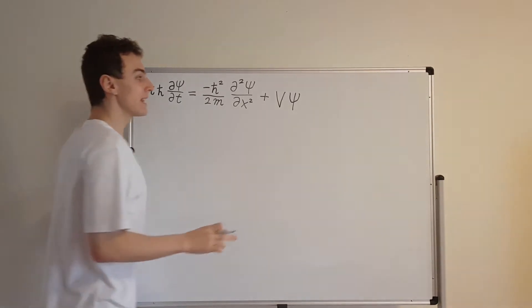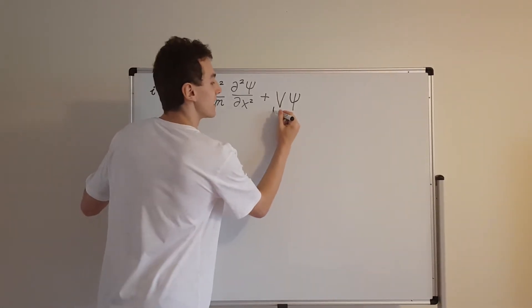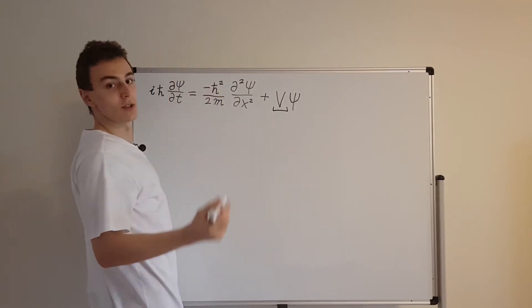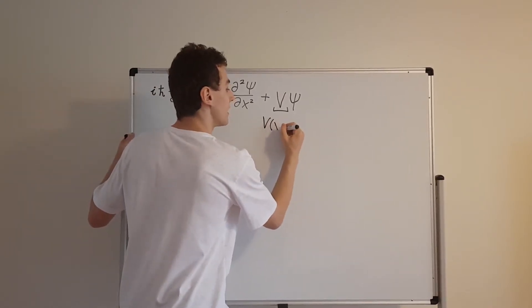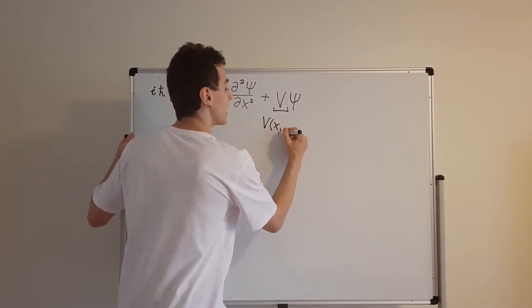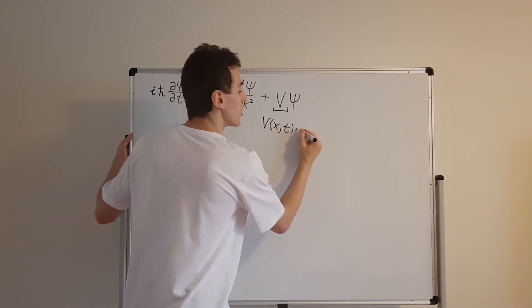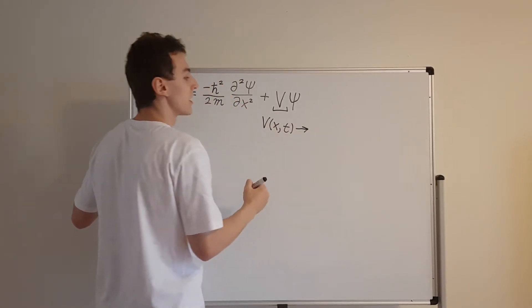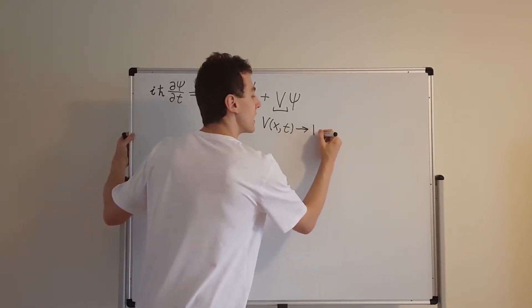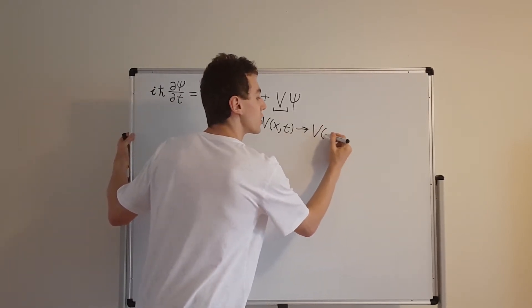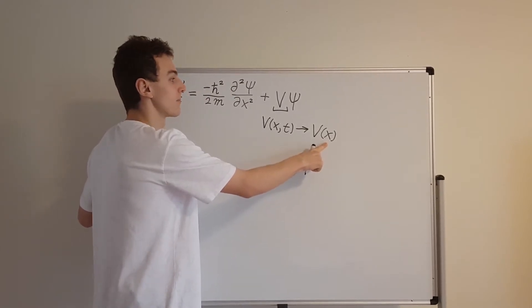We're going to make the assumption in this video that V does not depend on time. Usually you have V as a function of x and t, but because we're going to be using separation of variables it's going to be a lot easier to deal with potentials that are just functions of position. So V is just a function of x.